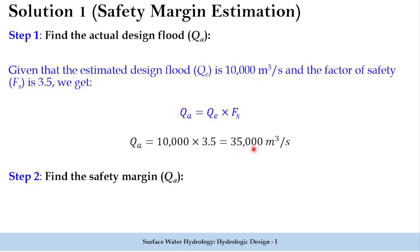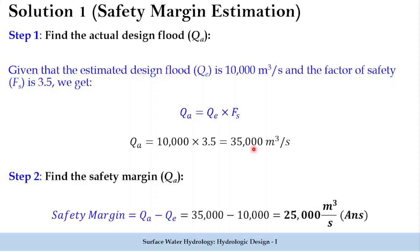Now we need to find the safety margin, which is QA minus QE — the difference between both. QA is 35,000 and QE is 10,000, so the difference is 25,000 cubic meters per second, which is the safety margin of the design flood. I hope you were able to understand the application of this formula.